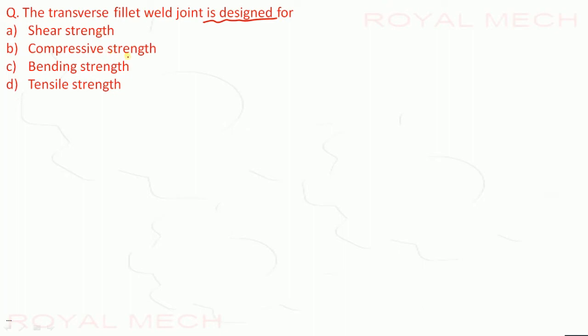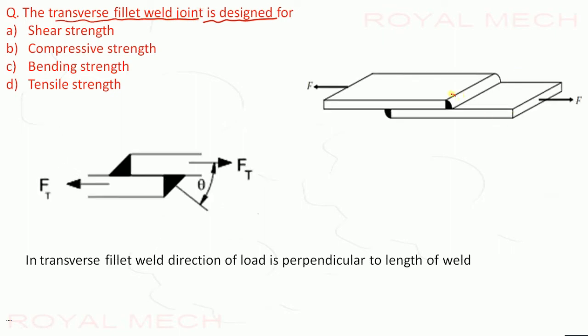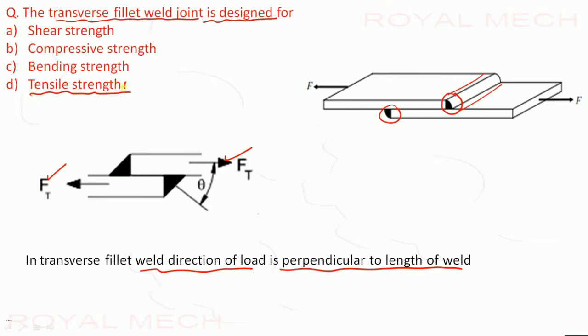The transverse fillet weld joint is designed for: shear strength, compressive strength, bending strength, or tensile strength. In a transverse fillet weld, the direction of the load is perpendicular to the length of the weld. Therefore, the transverse fillet weld is designed for tensile strength. Option D is the correct option.